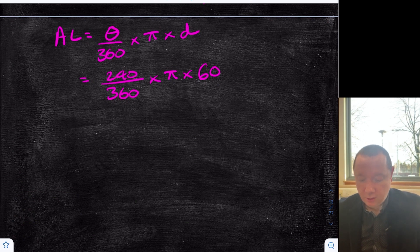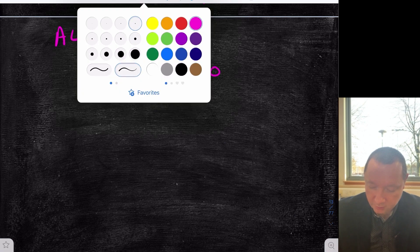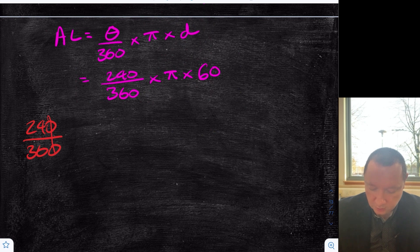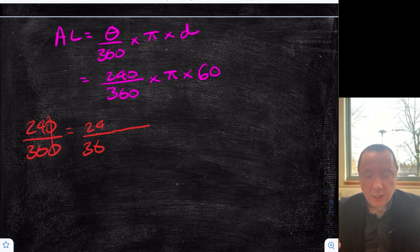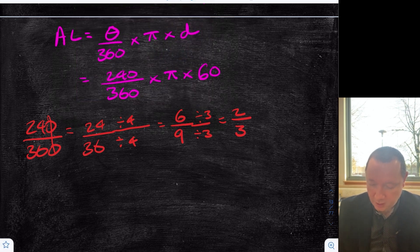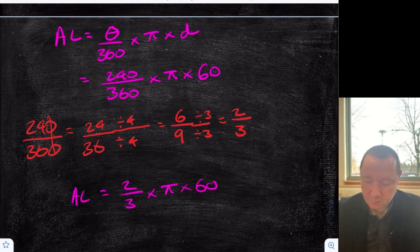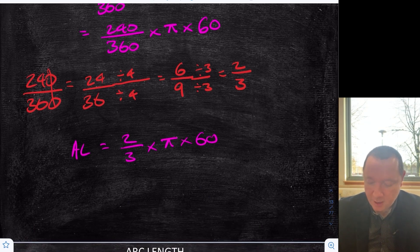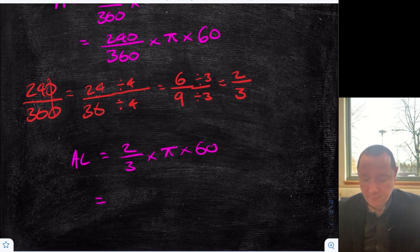To calculate this without a calculator, always best to simplify fractions first. I've got 240 over 360. Drop the zeros to get 24 over 36. A number that goes into both 24 and 36 — 4 goes in: 4 sixes is 24, 4 nines is 36. Then 3 goes in as well, giving 2 thirds. You could have got there quicker by dividing by 12. So arc length is 2 thirds times pi times 60. I've now got 2 thirds of 60: divide by 3 gives 20, times by 2 gives 40. So I've got 40 times pi.